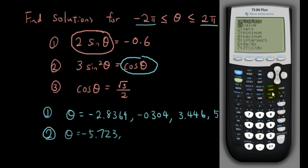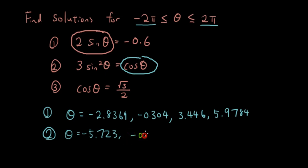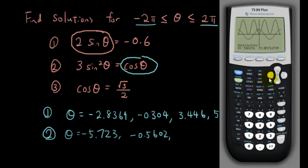Second trace, intersects, enter, enter, and try to guess where this one is. Negative 0.5602. And where else? Second trace, intersects, enter, enter. Negative, oh sorry, 0.5602.